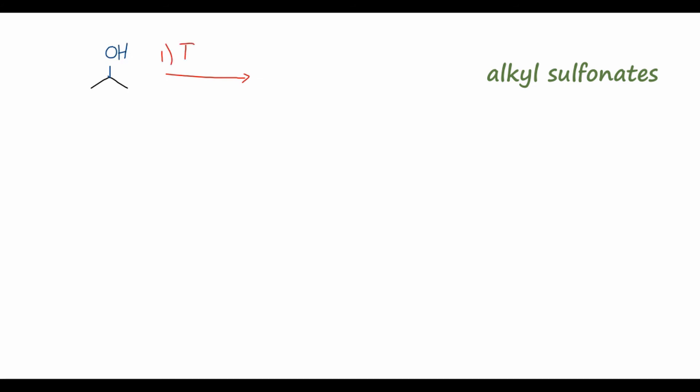The first step, we'll be treating it with tosyl chloride and pyridine. So I will draw both of those in a minute. And in the second step, we will add some sodium iodide. So iodide is going to be our nucleophile in the second step. And this will form our alkyl iodide.